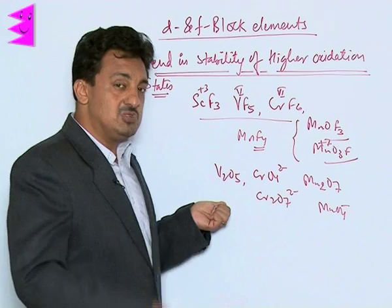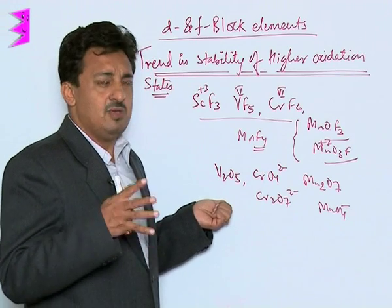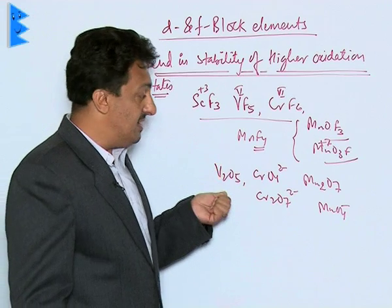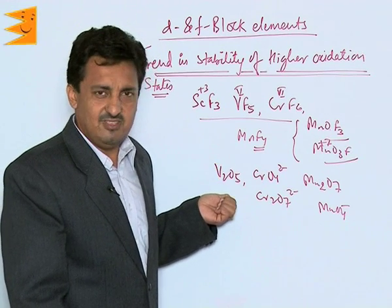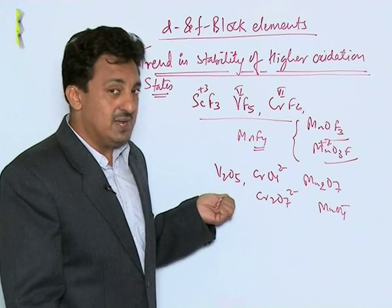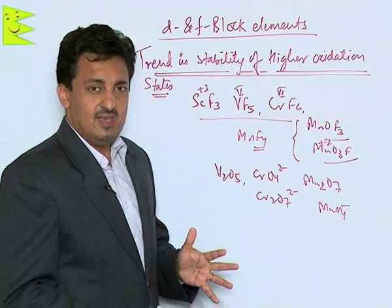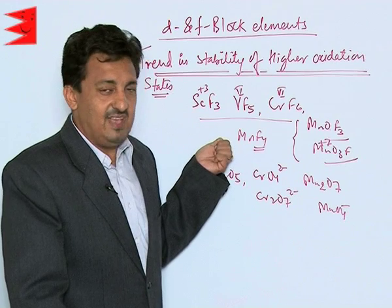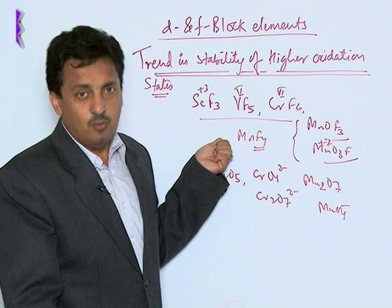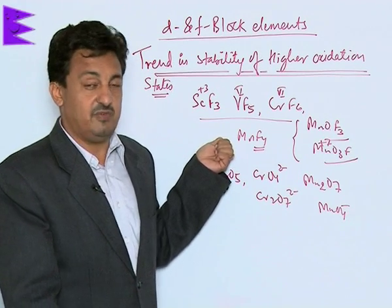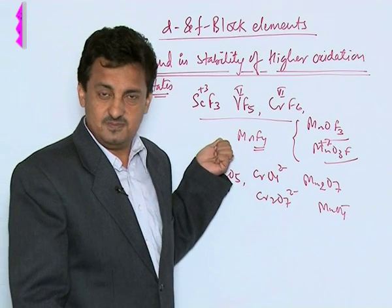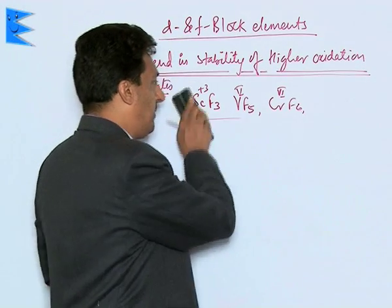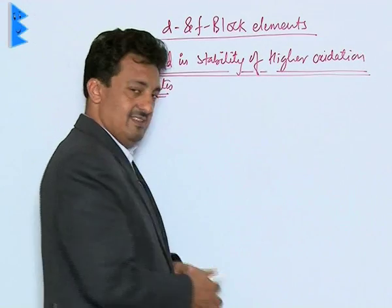What makes oxides much more stable than fluorides in the highest oxidation state is the tendency of oxygen to form multiple bonds with these transition elements, which leads to less crowding and as a result higher stability. In the case of fluorides, since they can only form single bonds, there is more crowding and they are not very stable in their highest oxidation state.